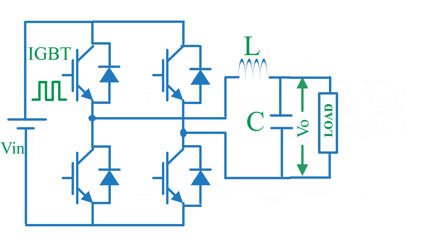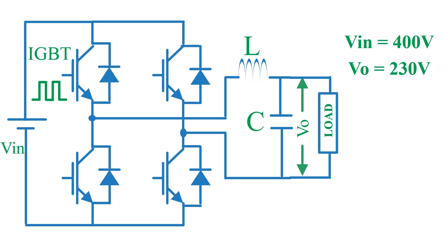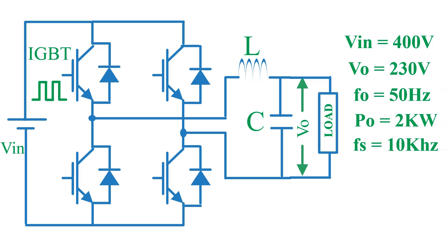This is how a single phase inverter looks like — I have marked all the components. Now, before proceeding into the design, let me give you the specifications: input voltage is 400V, output voltage is 230V at 50Hz, output power is 2 kilowatt, switching frequency is 10 kilohertz, and output THD is less than 5%.